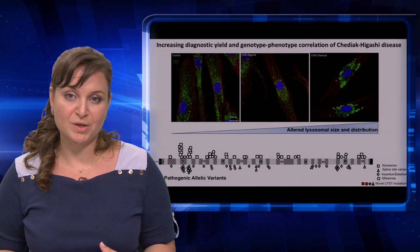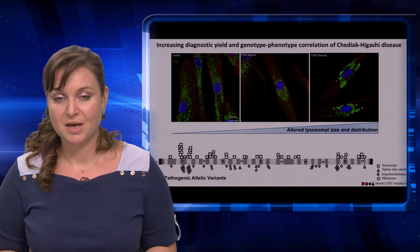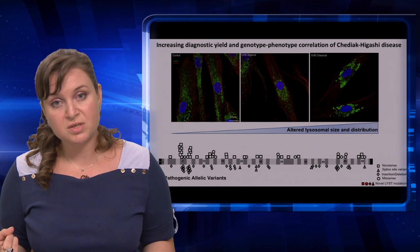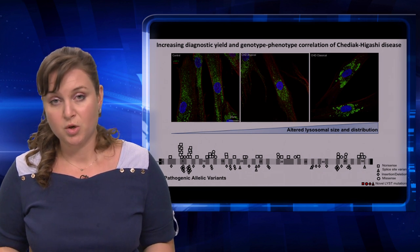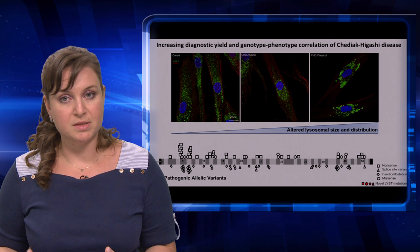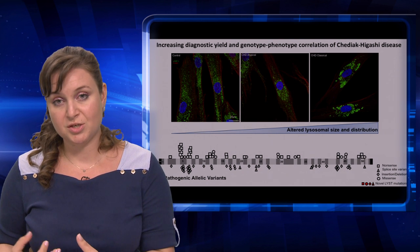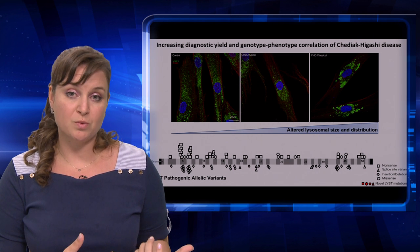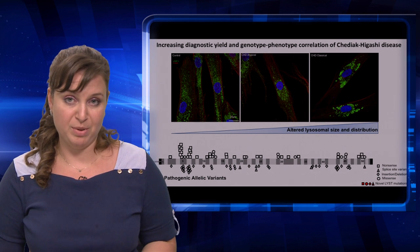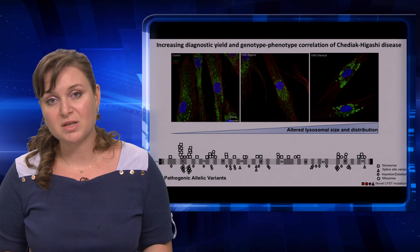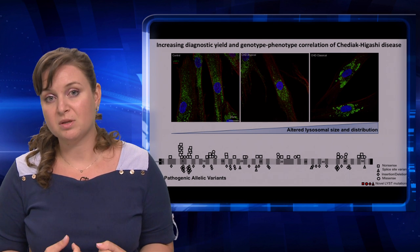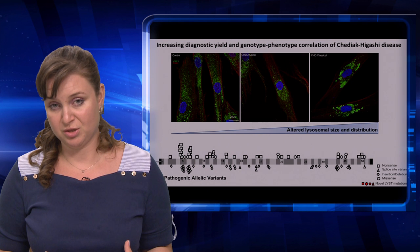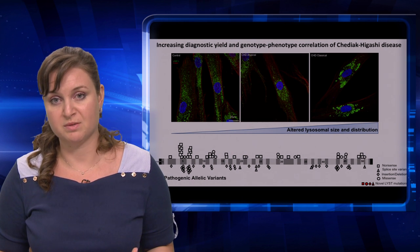Our question is: what would be the correlation between the clinical phenotypes and the molecular genotypes? Broadly speaking, two severe LYST mutations would characterize a classical CHD phenotype, whereas at least one milder mutation would describe an atypical CHD patient. The genotype-phenotype correlation is important because the compromised immune system in classical CHD patients can be treated with bone marrow transplant.